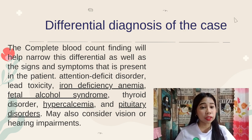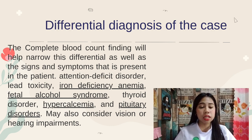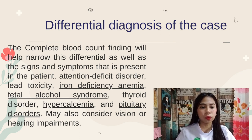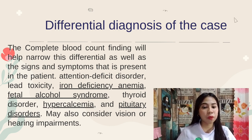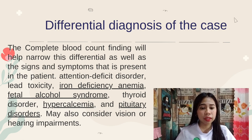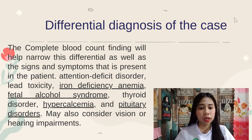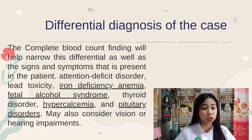Let us now move on with our differential diagnosis. The first is Attention Deficit Disorder or ADHD. It is one of the most common neurodevelopmental disorders of childhood, usually first diagnosed in childhood and often lasting into adulthood. Children with ADHD may have trouble paying attention, controlling impulsive behavior, or be overly active — which correlates with this case, as the child has had difficulty paying attention in class over the past few months. Next is lead poisoning or lead toxicity, which is the most likely diagnosis based on the signs and symptoms the child presents.